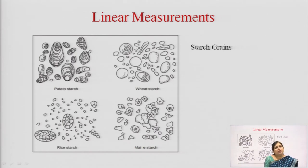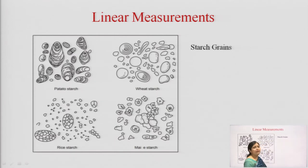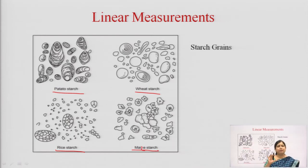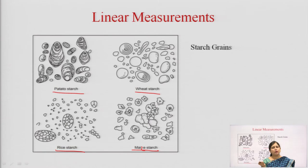In this slide you can see these are starch grains obtained from different sources — potato starch, wheat starch, rice starch, and maize starch. These starches have different shapes and patterns. You may have always seen starch as a white colored smooth powder, but when we look at it under the microscope they are very different in their shape, form, and even size.